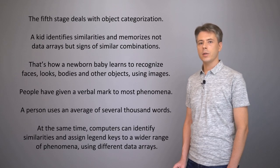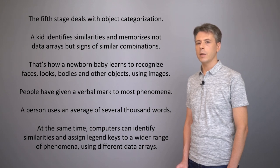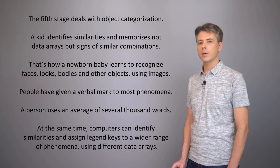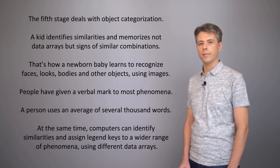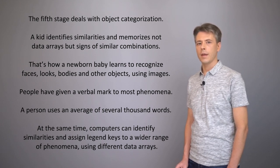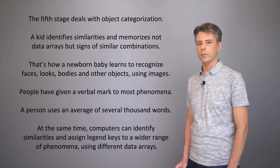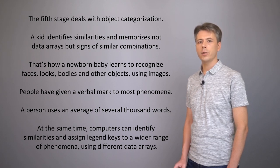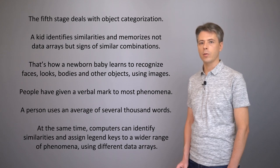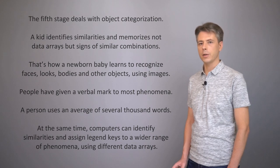The fifth stage deals with object categorization. A kid identifies similarities and memorizes not data arrays but signs of similar combinations. That's how a newborn baby learns to recognize faces, looks, bodies, and other objects using images. People have given a verbal mark to most phenomena, and a person uses an average of several thousand words. Computers can identify similarities and assign legend keys to a wider range of phenomena using different data arrays.